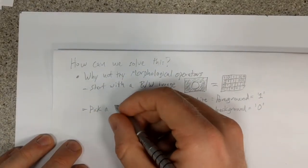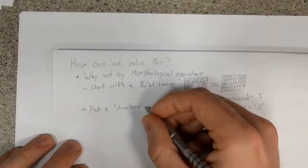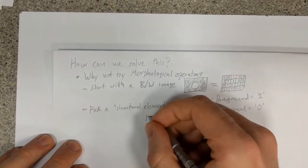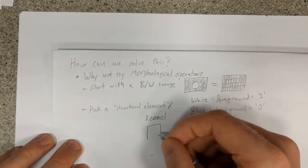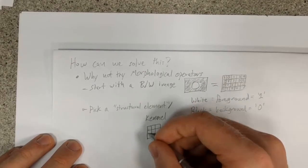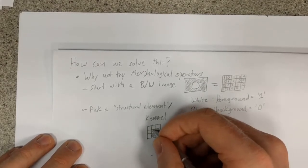Next, we define a pattern of bits that directs how our set operation will interact with our image. We call this the structural element, or kernel. This, too, is a collection of 1s and 0s that is smaller than the original image.